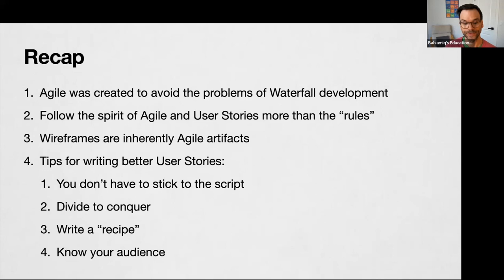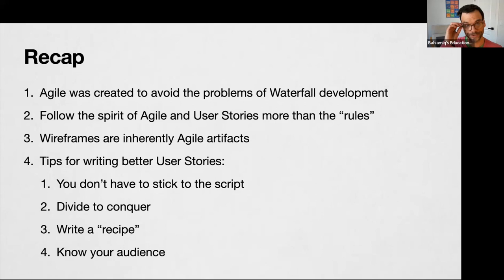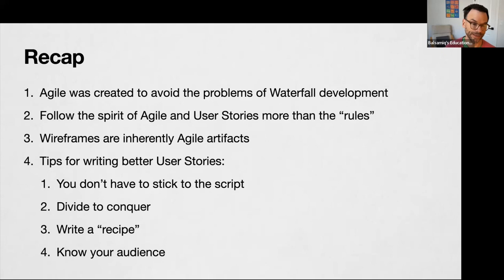Recapping what we covered: Agile was created to avoid the problems of waterfall development — it's a way to try to make things better, not a strict set of rules. Follow the spirit of Agile and use the stories more than the rules. Wireframes are inherently Agile artifacts. The four tips: don't have to stick to the script; divide up your stories; write a recipe — give clear instructions to your developers; and know your audience — the developers writing the code — and make sure they understand your intent.